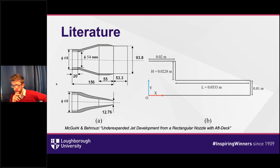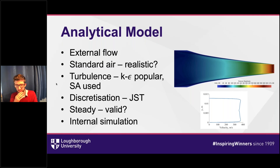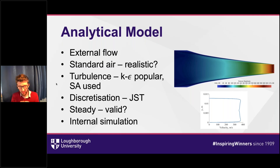The flow outside the nozzle was modeled using standard air, which is not fully representative of the exact chemistry in real exhaust flows, but allows investigation of basic flow physics and structures. K-epsilon turbulence modeling was most popular in the literature, but SU2 was somewhat limited in this regard. With the available Spalart-Allmaras and SST model variants, variation in the solution was very small, suggesting acceptability. JST discretization was selected for its compromise of robustness and accuracy.